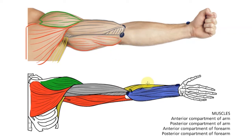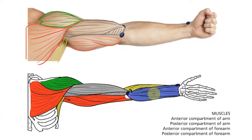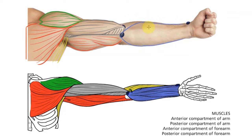We'll now move into the forearm, where again we have two groups: an anterior compartment and a posterior compartment. Our anterior compartment can be seen here in blue. These muscles pass into the anterior aspect of the wrist and hand, with most of them coming from the common flexor origin at the medial epicondyle. So to draw this group in we start from the medial epicondyle, past to the lateral aspect of the forearm, then to the medial aspect, and continue those lines down towards the anterior aspect of the wrist. If you're not sure how to remember these muscles in the anterior forearm, I'd recommend having a look at the linked video.